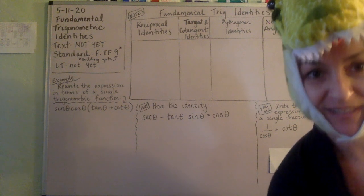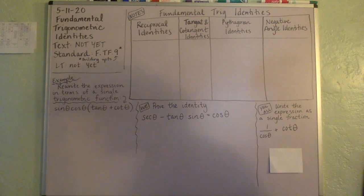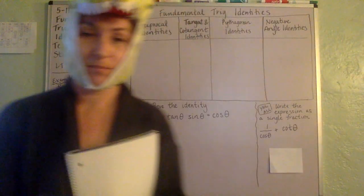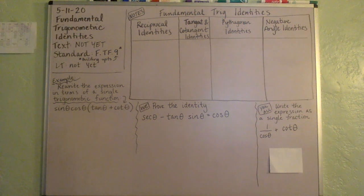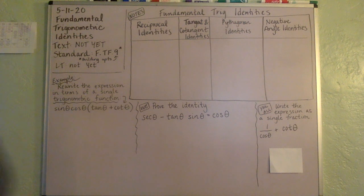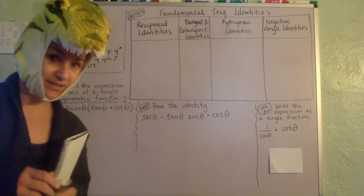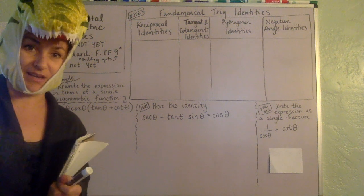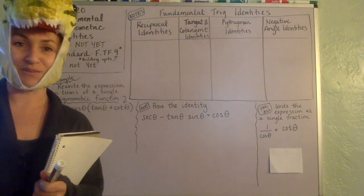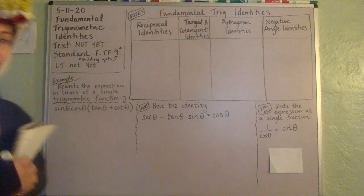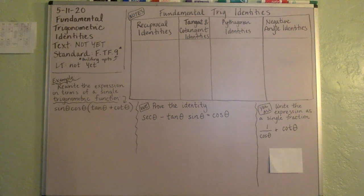Hi, FST friends. Let's take a look at what we're covering today. We're done with sine and cosine graphing, and so we're moving on to the fundamental trigonometric identities. I sent to you all a guided note sheet to help you keep these things organized, so please feel free to use it.